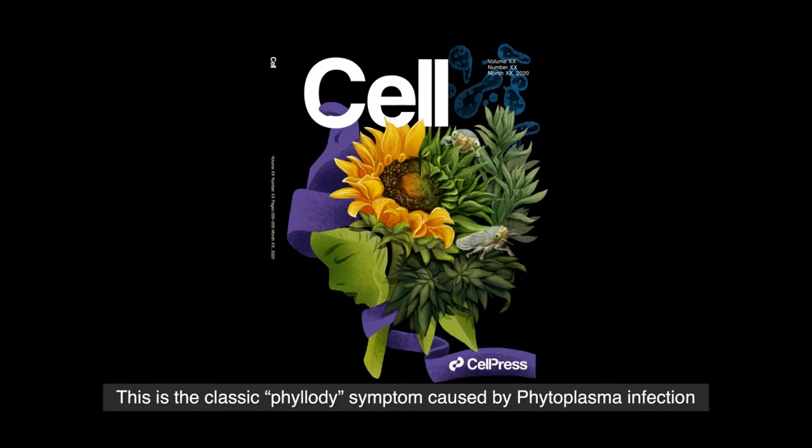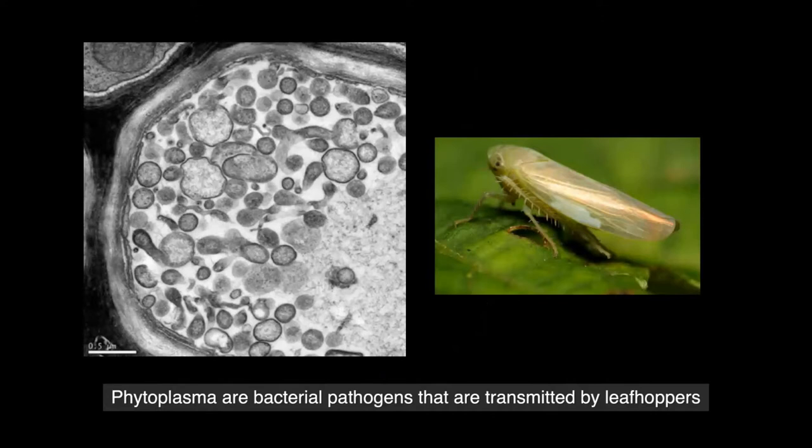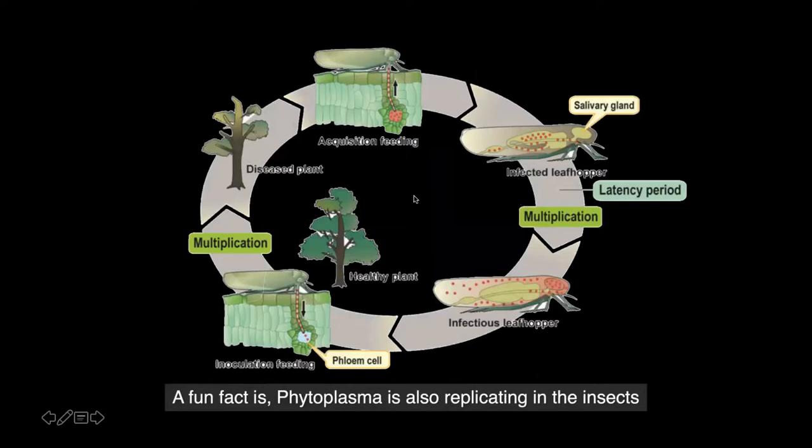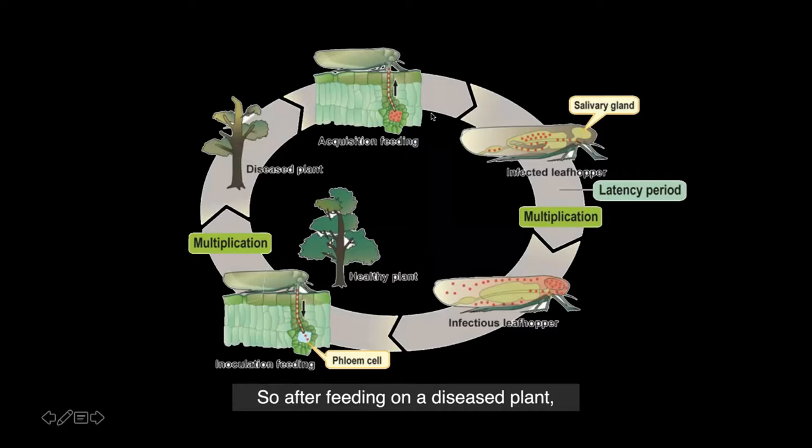Phytoplasma are bacterial pathogens that are transmitted by leafhoppers. They accumulate in phloem, and this is how they look under a microscope. Phytoplasma is also replicating in the insects — after feeding on a diseased plant, phytoplasma accumulates in the leafhopper, then spreads to a new host when the infectious leafhopper feeds on another plant.